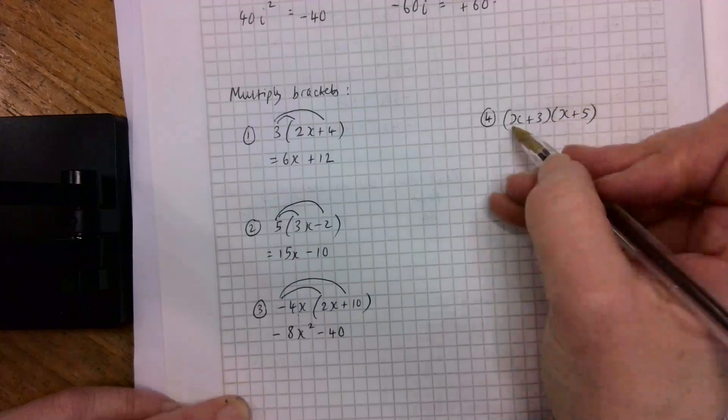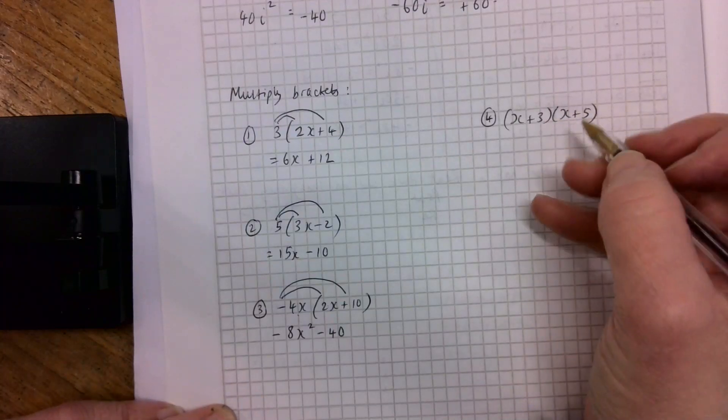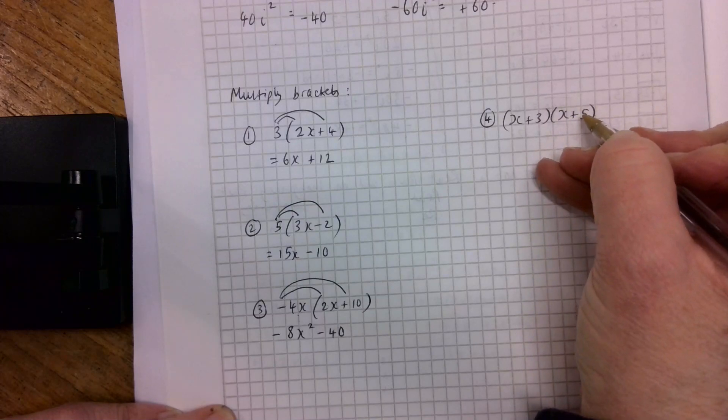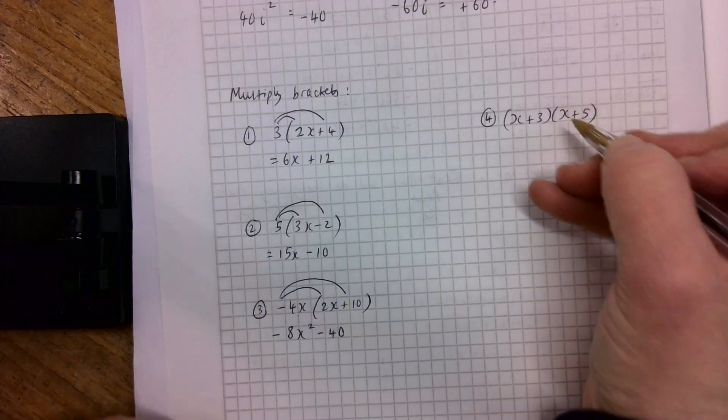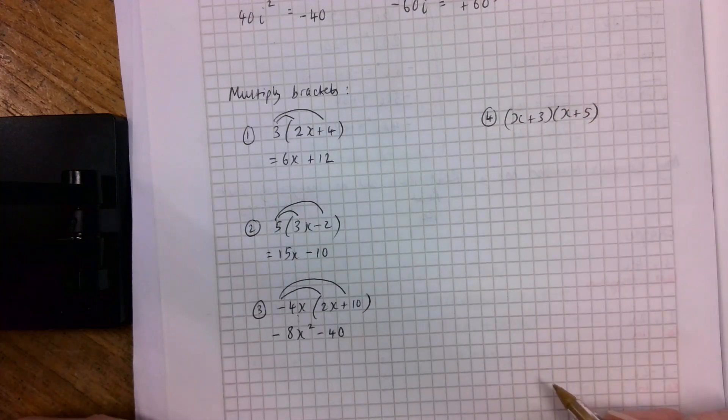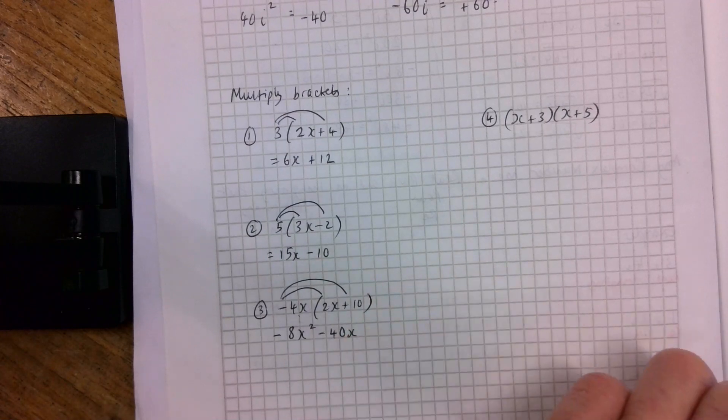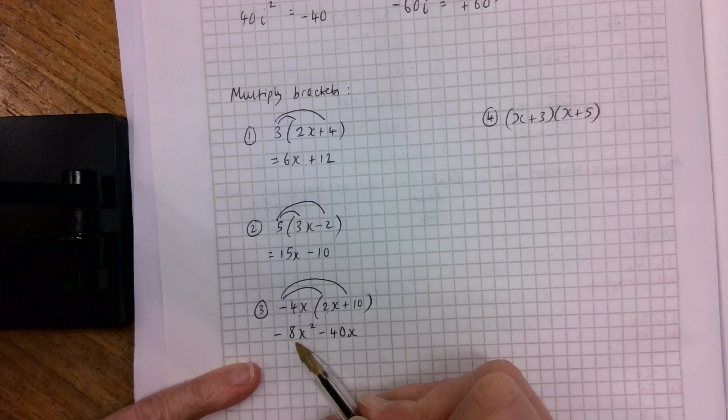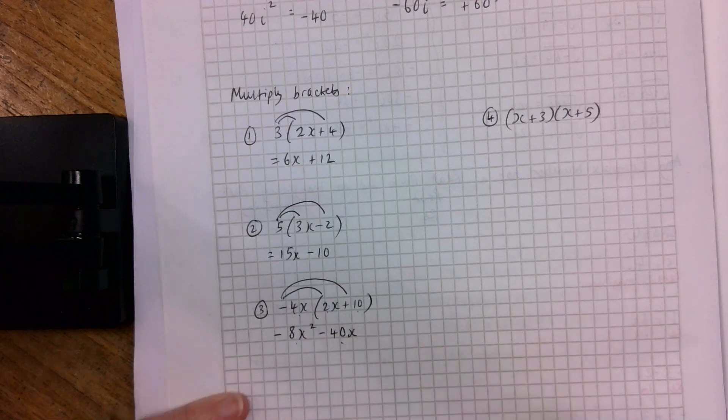When you come to a double bracket, if you remember, we've got to multiply everything in this bracket by everything in this bracket. So I like to use... Oh, thank you, minus 40x. Thanks, Alex. So minus 4x by 2x is minus 8x squared, and minus 4x by 10 is minus 40x. That's great.